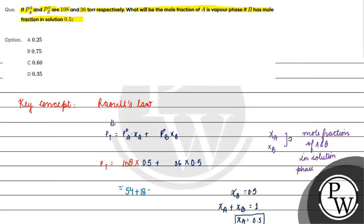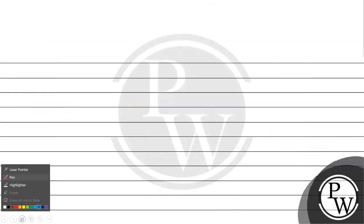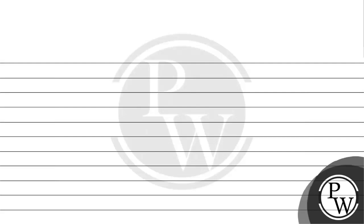That gives us 54 plus 18, which is equal to 72 Torr. So the total pressure is 72 Torr. Now we need to find what the mole fraction of A in the vapor phase will be. I know that PA is equal to Y_A — the mole fraction of A in the vapor phase — into total pressure.